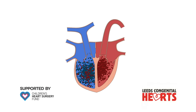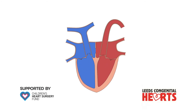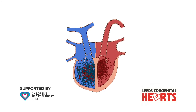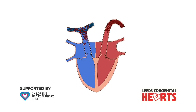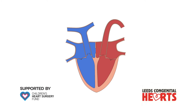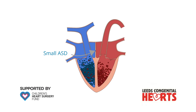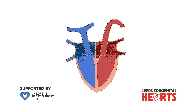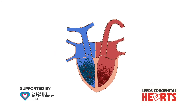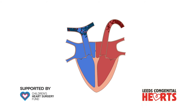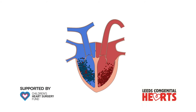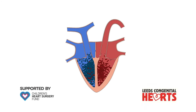If larger ASDs are left untreated over a long period of time, the extra blood flow can cause permanent damage to the right side of the heart and the arteries of the lungs. At the other end of the spectrum, when an ASD is small, there may only be a very small amount of extra blood flow through the right side of the heart and lungs such that the right side of the heart does not become enlarged. These smaller ASDs often require no treatment but may require observation over time.